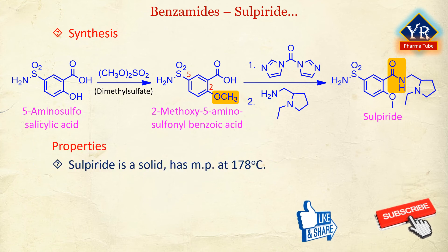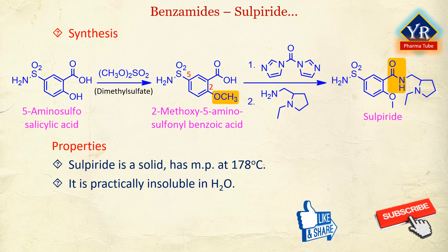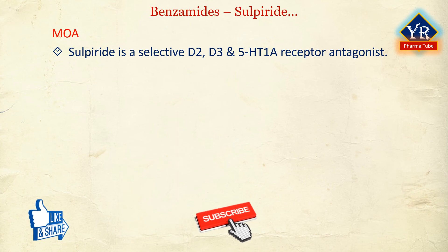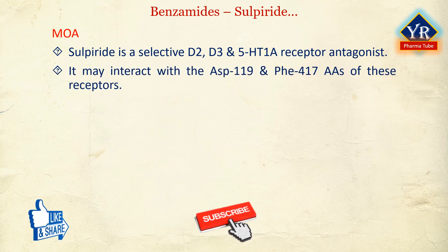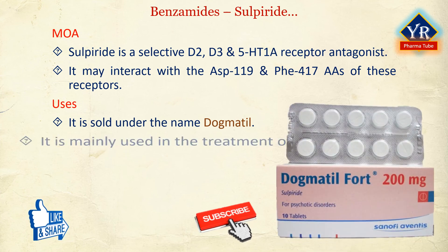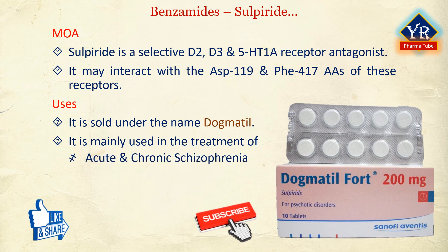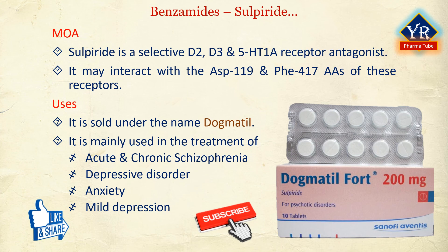Sulpiride is a white or almost white solid crystalline powder with a melting point of 178 degrees centigrade. It is practically insoluble in water and is slowly absorbed from the gastrointestinal tract. Sulpiride is a selective dopamine D2, D3, and 5-hydroxytryptamine-1A receptor antagonist. In silico studies show that sulpiride may interact with the aspartic acid-119 and phenylalanine-417 amino acid residues of these receptors. D2 receptors should be 65–80% occupied for optimal treatment and minimal adverse effects. It is sold under the brand name Dogmatil. It is used mainly in the treatment of psychosis associated with acute and chronic schizophrenia and major depressive disorder, and sometimes in low dosage to treat anxiety and mild depression. It has been used therapeutically as an antidepressant, antipsychotic, and digestive aid. Many of these drugs may also be effective against nausea, emesis, and pruritus.